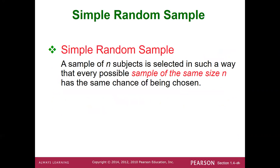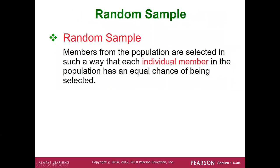A simple random sample is a sample of n subjects selected so that every possible item has an equally likely chance of being selected. A random sample means each individual member of the population has an equal chance of being selected. A simple random sample is more restrictive in terms of the group selected. We'll see specific examples illustrating the difference in homework one.